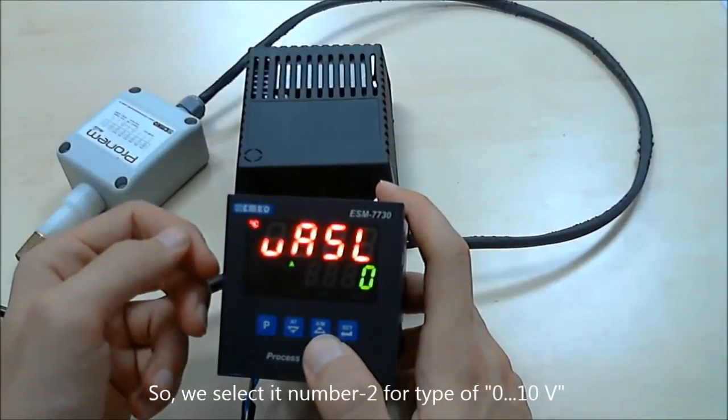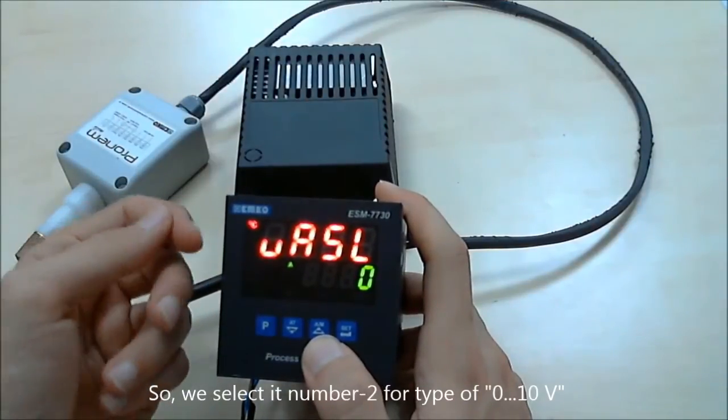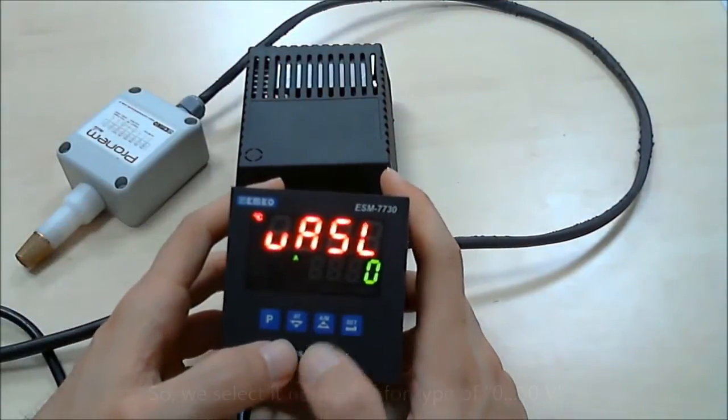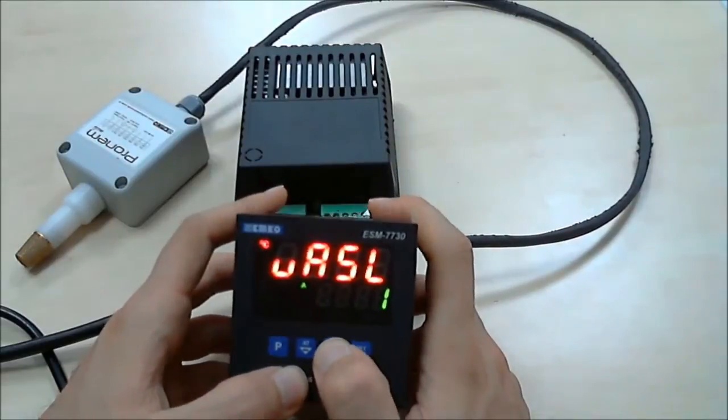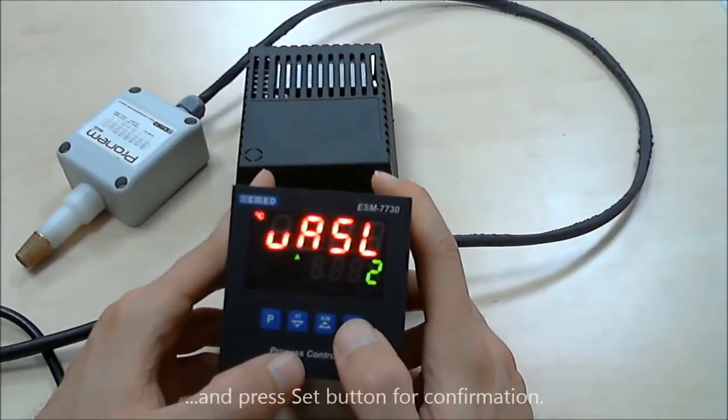For 0 to 10 Volt input, this should be selected as number 2 again. Press set button for confirmation.